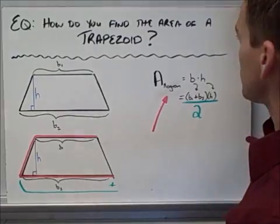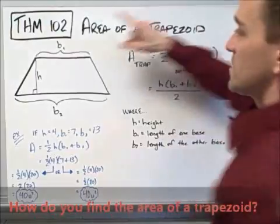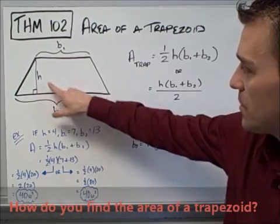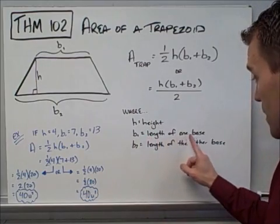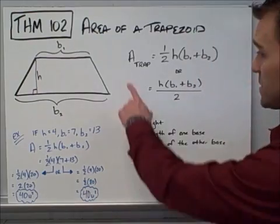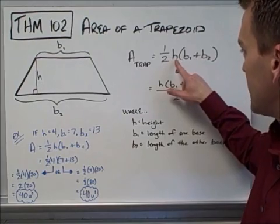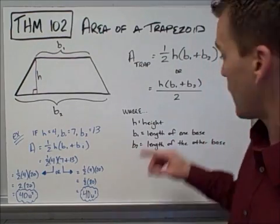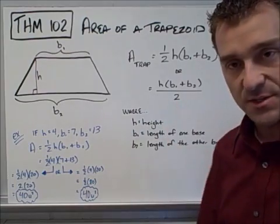Put this in your notes or your foldable. This is Theorem 102 — area of a trapezoid. In the picture, B1 is the length of one base, B2 is the length of the other base, and h is the height. The formula is: area equals one-half times h times (B1 + B2). You can also write it as h times (B1 + B2) all divided by two — it's the same exact thing.